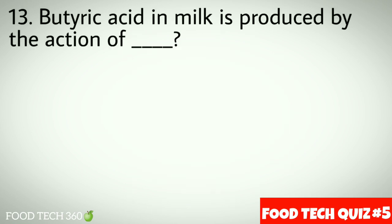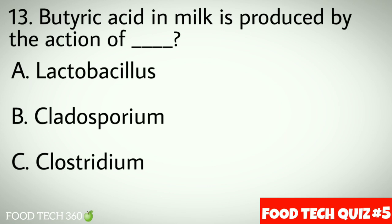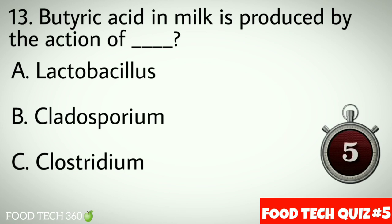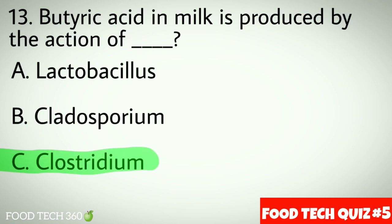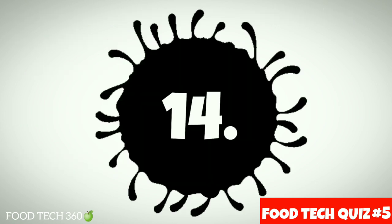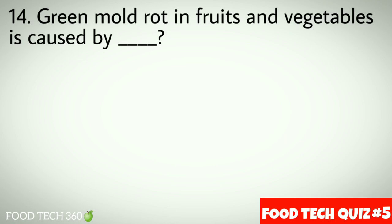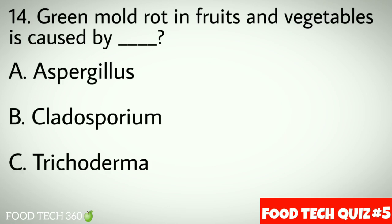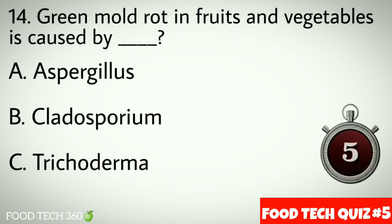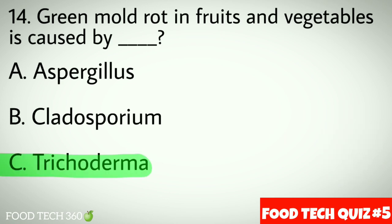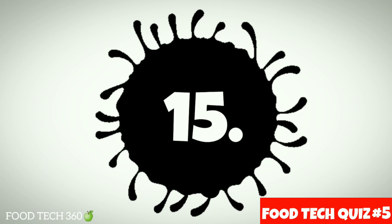Question number thirteen: butyric acid in milk is produced by the action of dash. Options: a) Lactobacillus, b) Cladosporium, c) Clostridium. Correct answer: c) Clostridium. Question number fourteen: green mold rot in fruits and vegetables is caused by dash. Options: a) Aspergillus, b) Cladosporium, c) Trichoderma. Correct answer: c) Trichoderma.